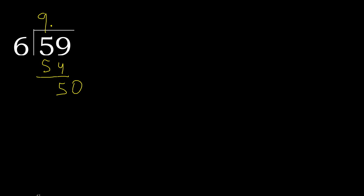6 multiplied by 9 is 54, which is greater. 6 multiplied by 8 is 48 — it is not greater. 50 minus 48 is 2. There is no next number, therefore complete — always complete with 0.